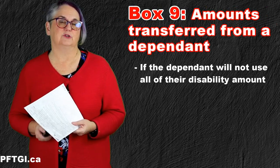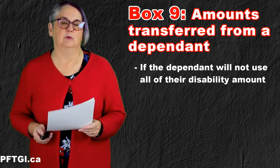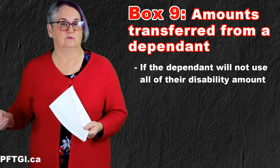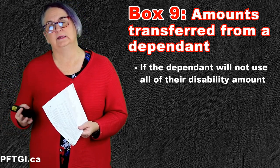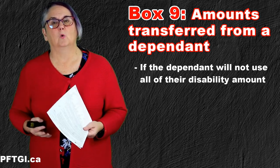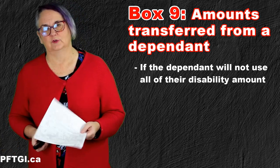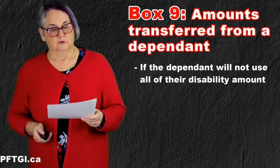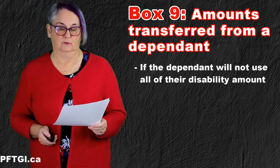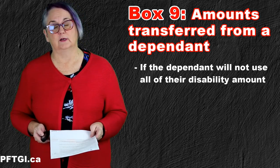The last box is box 9, which is amounts transferred from a dependent — not the spouse. This is the same basic idea: a child perhaps in university who doesn't need all of their tuition to bring their income to zero can transfer it to a parent or grandparent. Or a child with a disability tax credit and no income can transfer that disability tax credit to you. That gives us all of the boxes, and once you have numbers in all of them — most of which will be zeros — you add it up and the total goes in box 10.